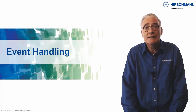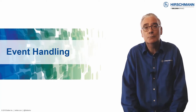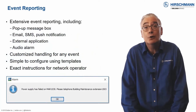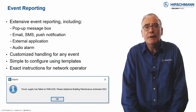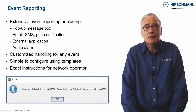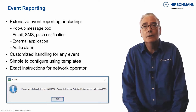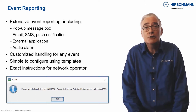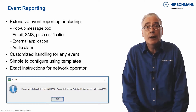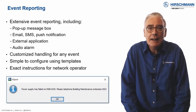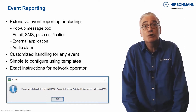Industrial HiVision gives you a choice of how to achieve these objectives. Event logs store information for later use, but often if an event occurs, you or your network operators need to know immediately. Industrial HiVision offers you many options for event reporting. An audio alarm will attract attention, and standard options like email, SMS, and push notifications make use of mobile phones.